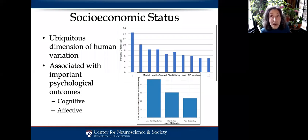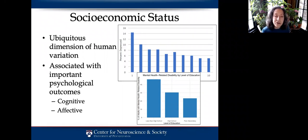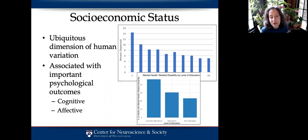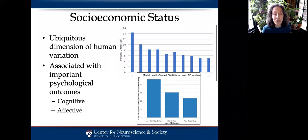That 14% compares to well less than half — really more like a third — of that rate in the top income decile. Another illustration, also from Canadian government records, is the relation of mental health-related disability — that is, people who have such mental health problems that they can't work — as a function of level of education. You're almost twice as likely to be mentally disabled if you have less than a high school education than if you've gone beyond high school.